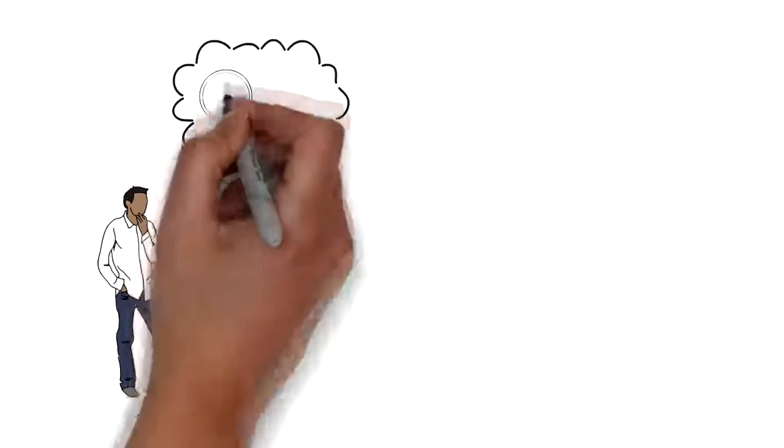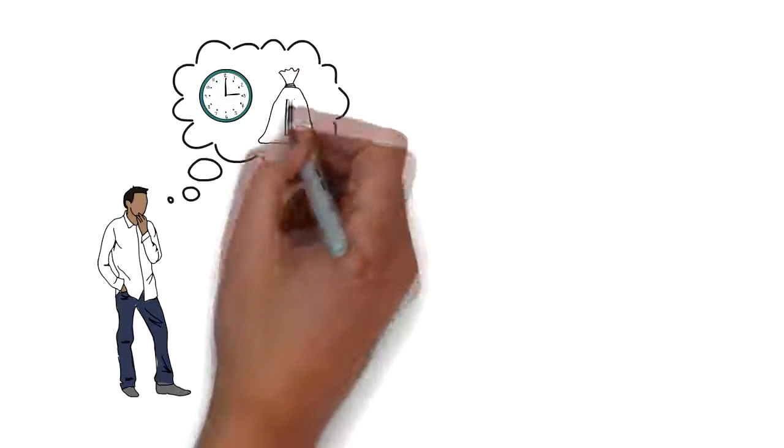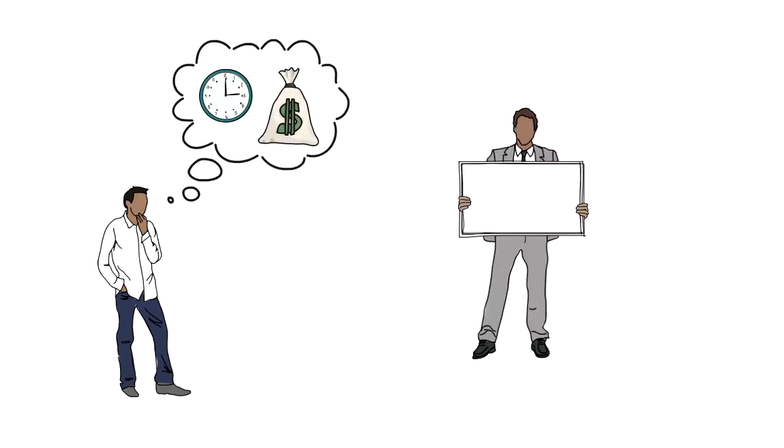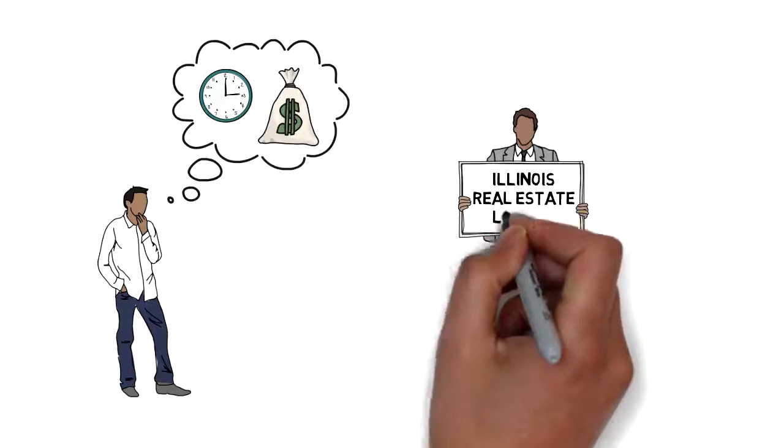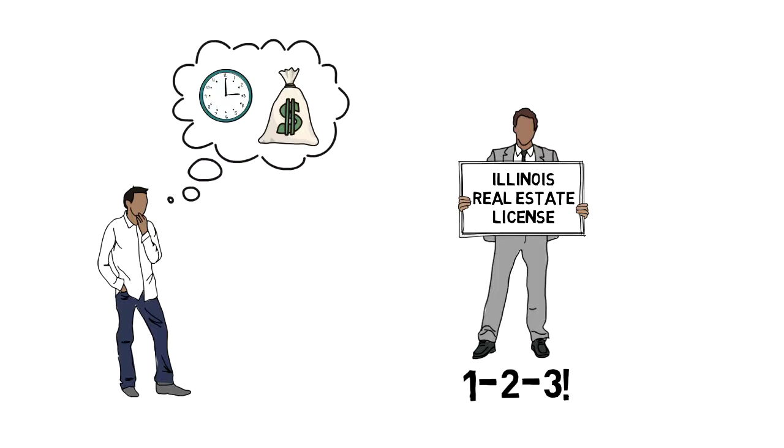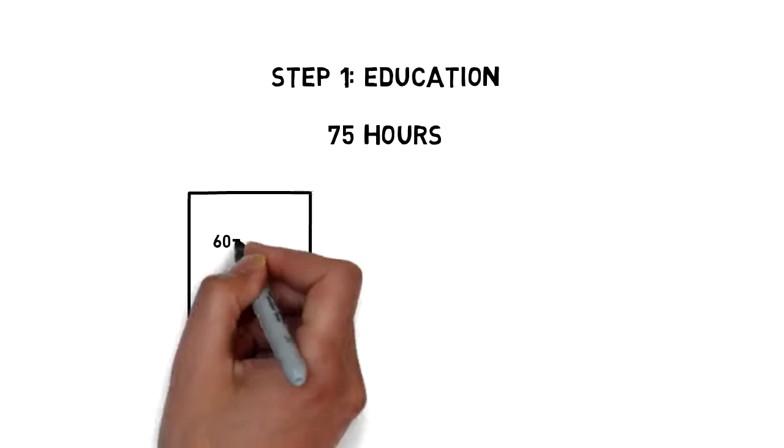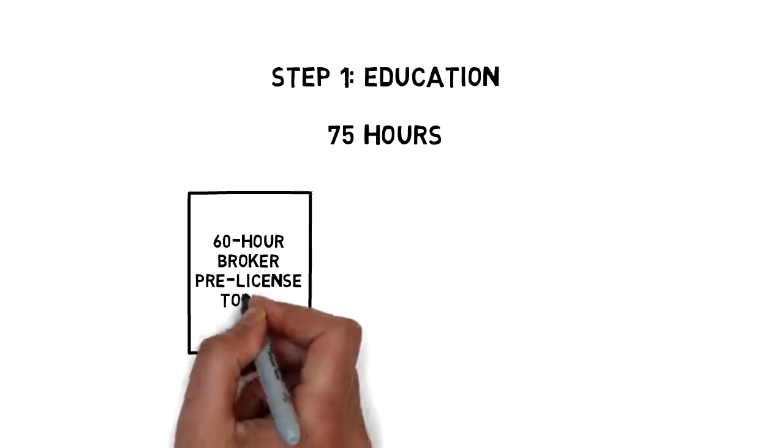Are you dreaming of a new career, one with flexible hours and unlimited earning potential? You can earn a real estate license in Illinois in just three simple steps. First, you need to complete 75 hours of real estate education.